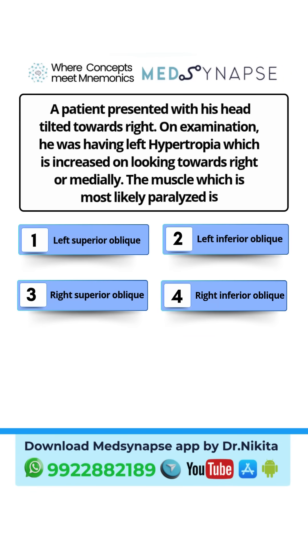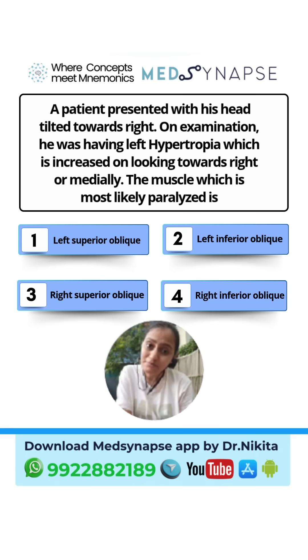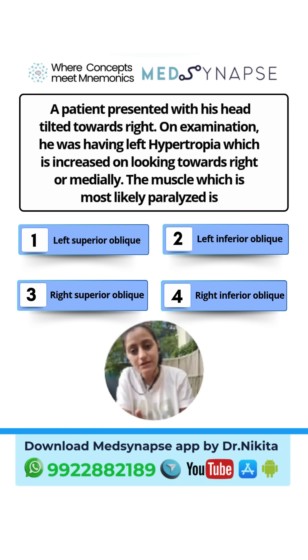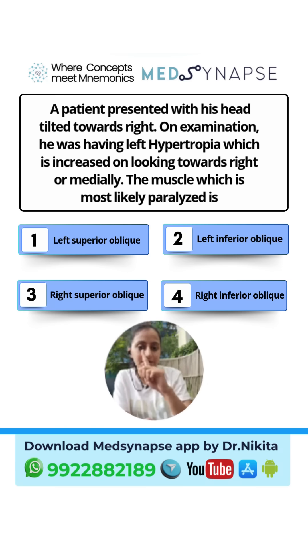Let me give a quick example — the most common query for the PARC 3-step test. A patient presents with the head tilted to the right side, and on examination there is left hypertropia which is increased on looking towards the right or medially. First, understand that when the patient presents with head tilted right, that is the position where they see better. That means the diplopia is getting worsened on the left tilt. The hypertropia is on the left side, and it is increased on looking towards the right, meaning the gaze is to the right.